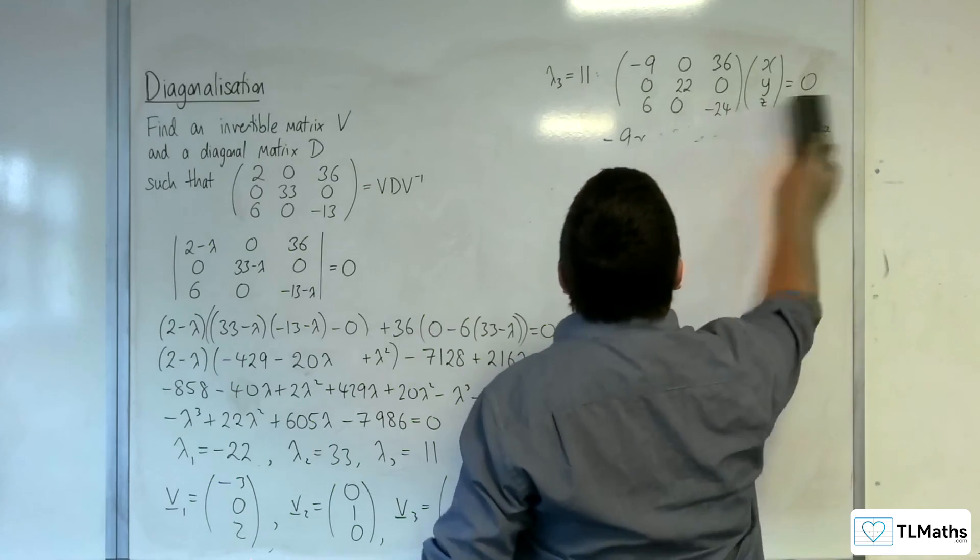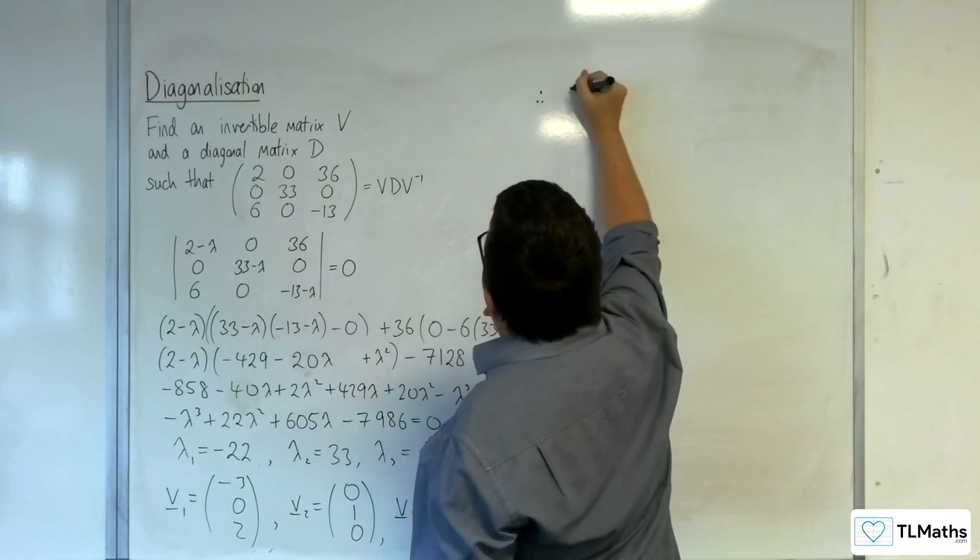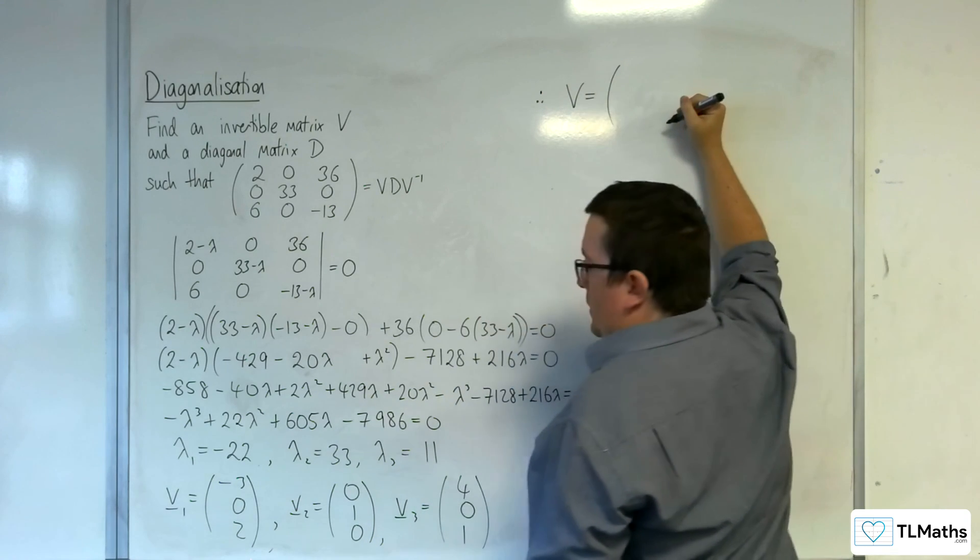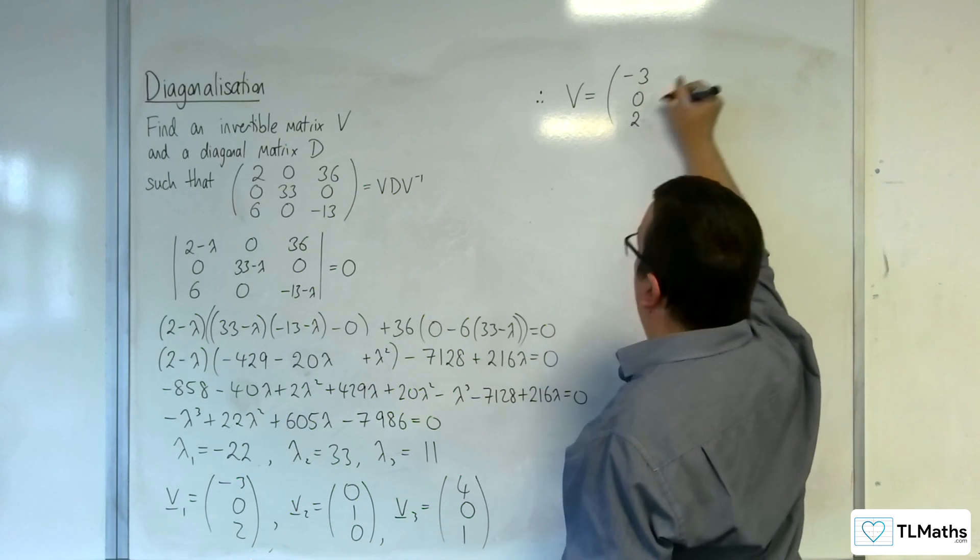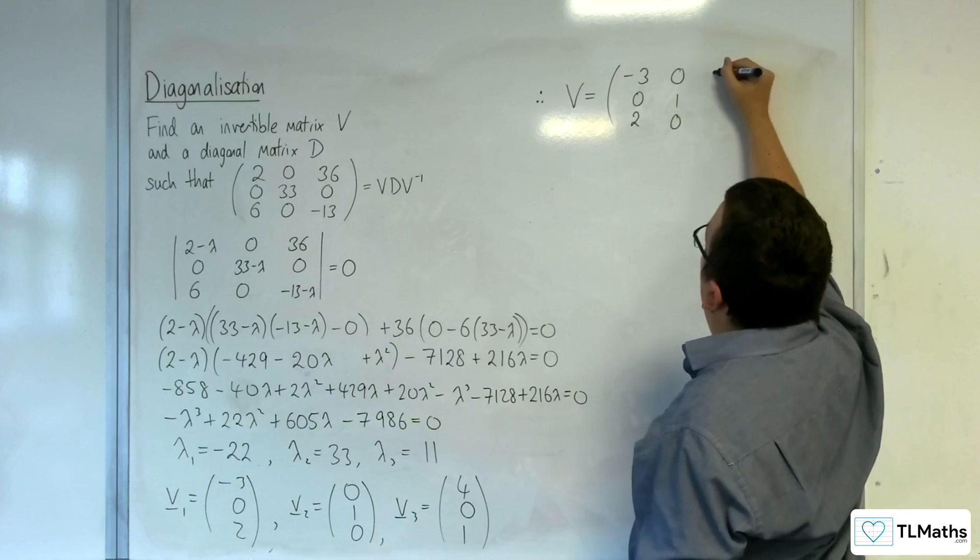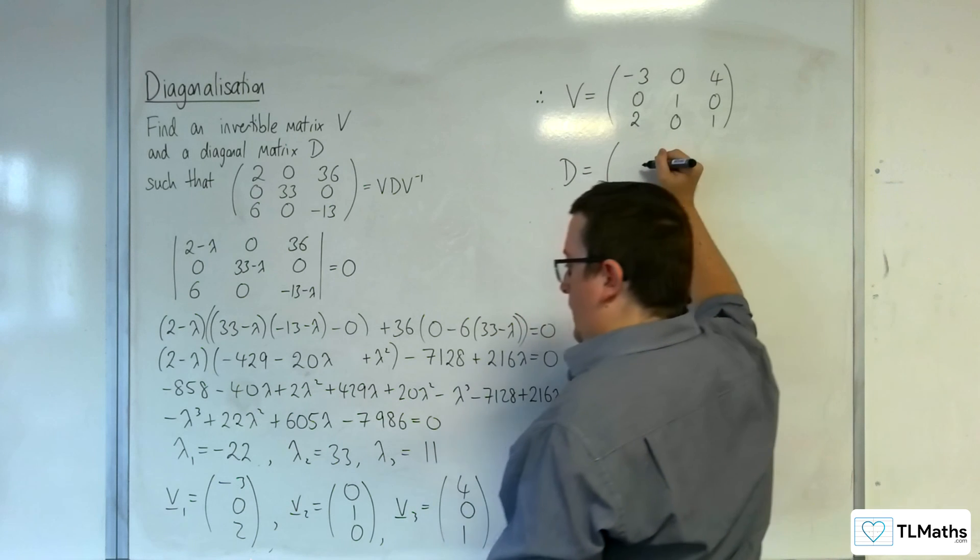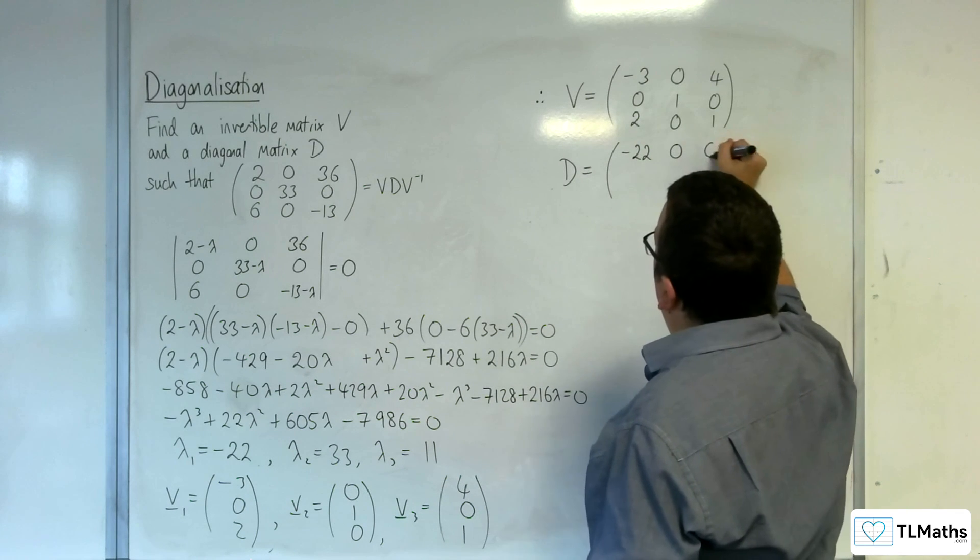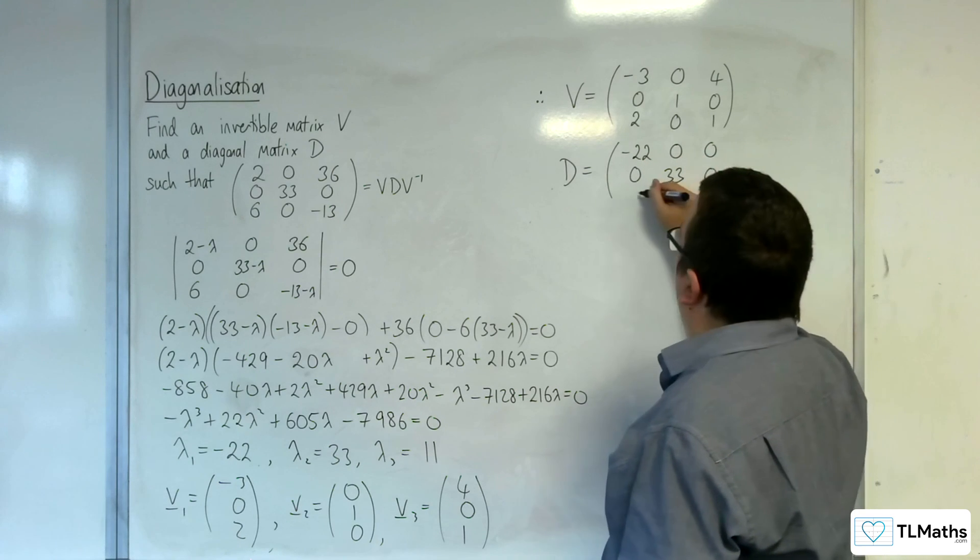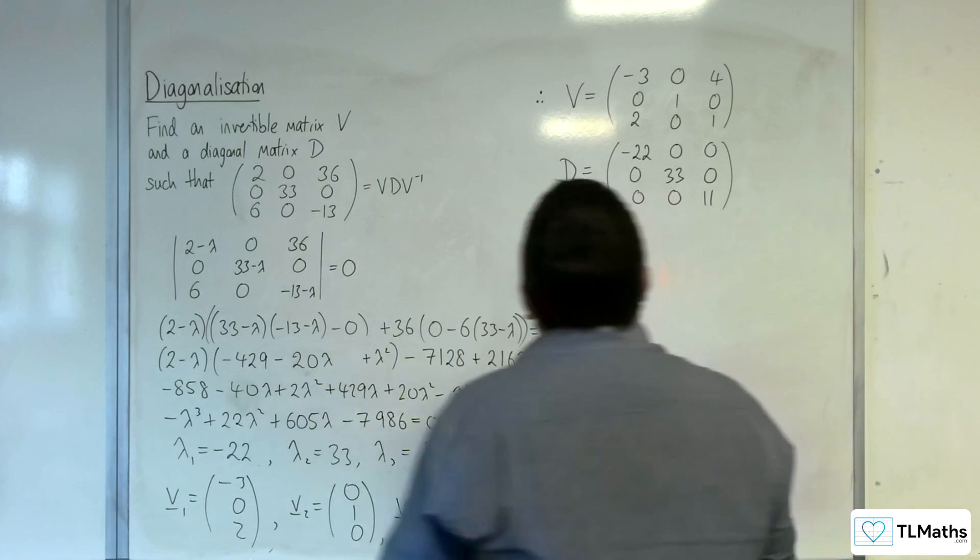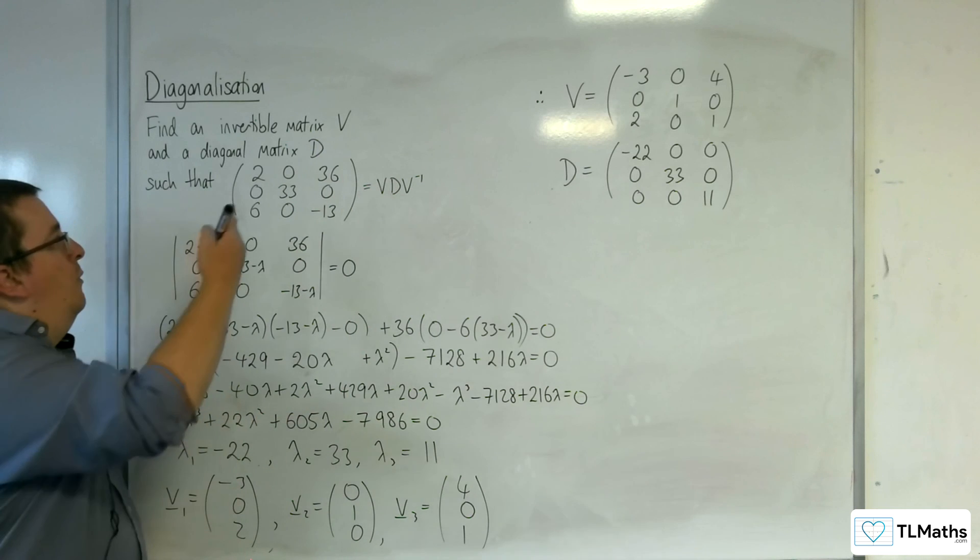We now have the information that we need. So therefore, v, the invertible matrix, is made up of our three eigenvectors, minus 3, 0, 2, 0, 1, 0, 4, 0, 1. And d is minus 22, 0, 0. Remember, these got to match up in the correct order, 0, 33, 0, 0, 0, 11. And so that's our v and d for this matrix.